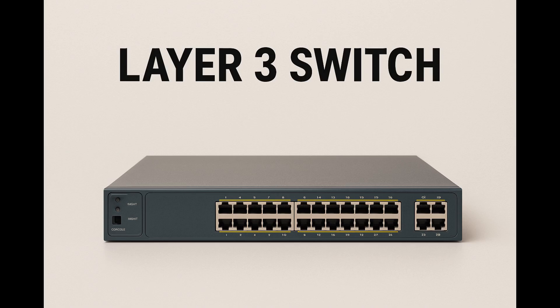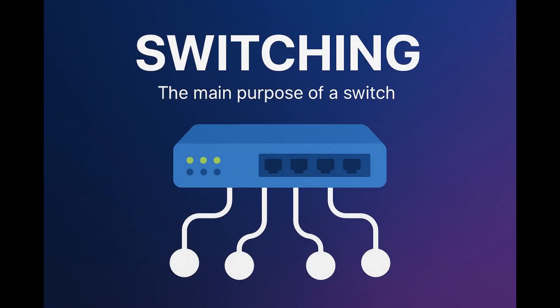So why do we even have layer three switches? And if a switch can be both layer two and layer three, why would we consider buying a router if a router is only a layer three device? Well, a switch as the name suggests is made for switching. And even if it can do routing, even if a switch can work with IP addresses, it will never do it as well as a router does. We use routers to handle more complex routing. If we use routing in switches, we do that because we just need to route traffic locally in a private network, and a switch is simply enough for that basic routing.